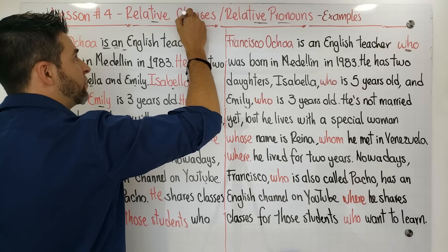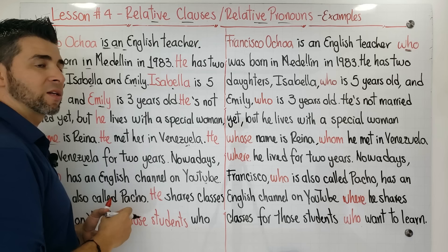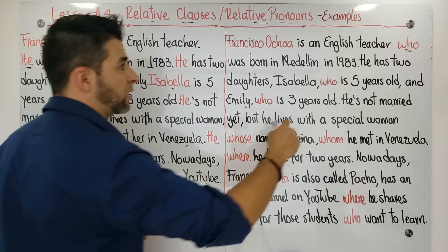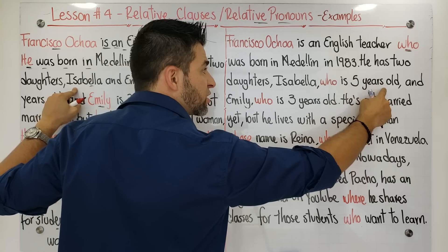This relative pronoun is connecting these two independent clauses and giving a relationship between them. A relative pronoun helps you construct a relative clause — something with a relationship between the two sentences we have. OK, let's continue: 'He has two daughters, Isabela...' — I mentioned Isabela — 'who is five years old.' What is 'who' doing here?